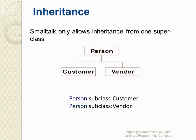Smalltalk only allows inheritance from one superclass. This means that objects can only be classified in one way, which is a significant problem for some applications. Other object-oriented programming systems allow multiple inheritance, which helps to alleviate this problem.